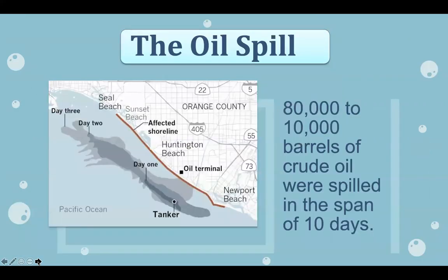The oil spill was caused by Unocal. The source was a blowout on January 28, 1969, six miles from the coast on Union Oil's Platform A in the Dos Cuadras offshore oil field. Within a 10-day period, an estimated 80,000 to 100,000 barrels of crude oil spilled into the channel and onto the beaches of Santa Barbara County in Southern California, fouling the coastline from Goleta to Ventura as well as the northern shores of the four northern channel islands.